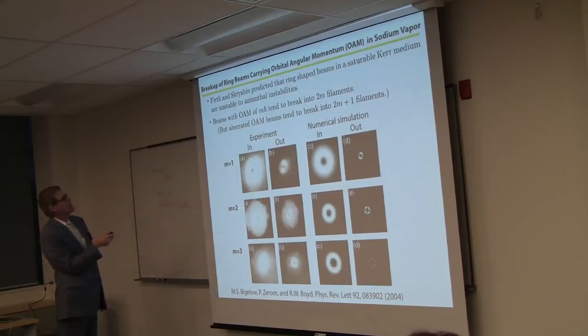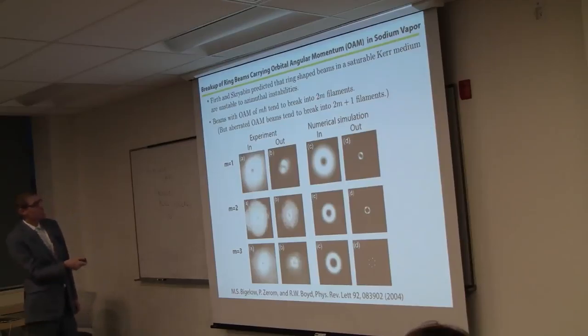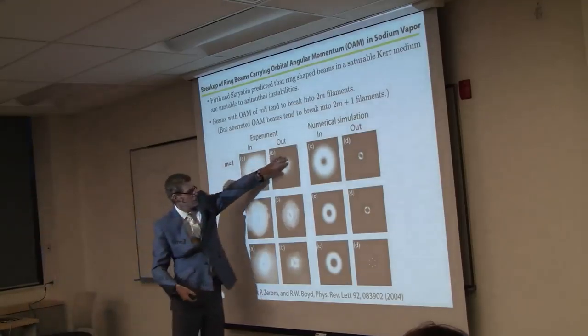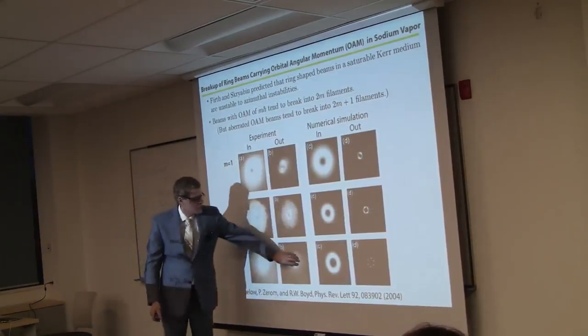Firth and Scriabin predicted that ring-shaped beams in a saturable Kerr medium are unstable to azimuthal instabilities. And they will break up. An OAM of M will tend to break up into 2M filaments, although under certain circumstances it might be 2M plus 1. So here are our experimental results for M equals 1, 2, and 3. And you can see this is broken up into 2 spots, 4 spots, 6 spots.